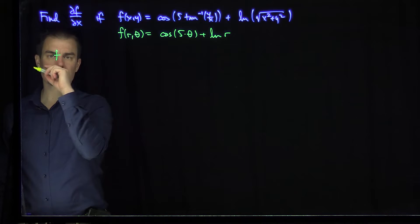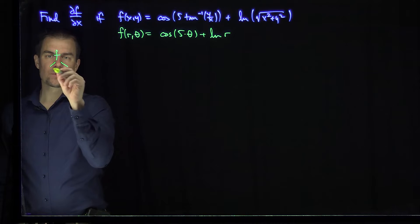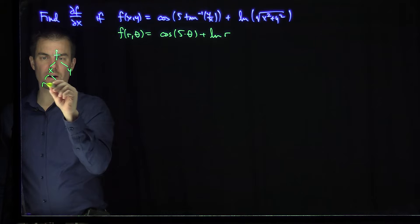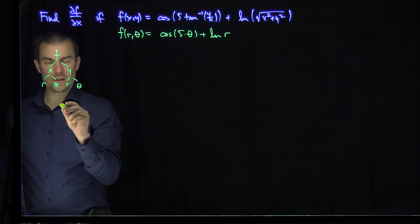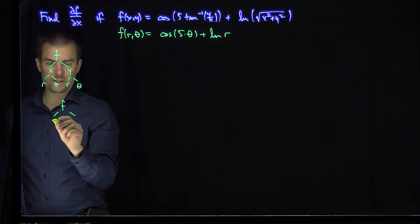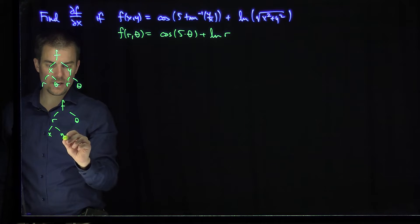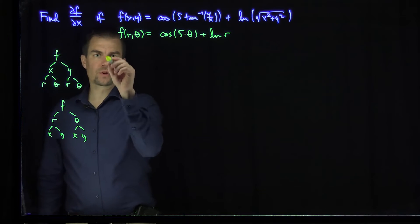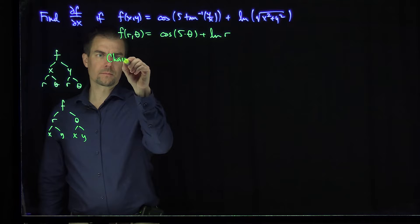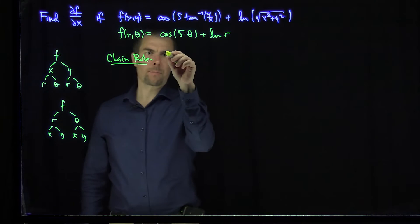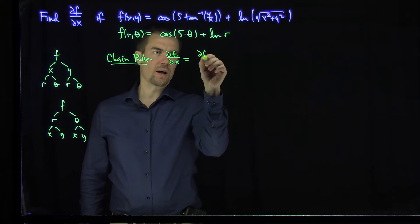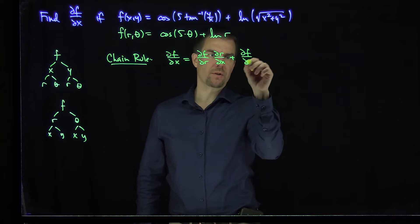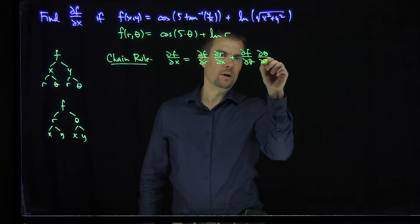We have a function f of x and y, and we think of x and y as functions of r and theta, or equivalently r and theta depend on x and y. By the chain rule, partial f partial x equals partial f partial r times partial r partial x, plus partial f partial theta times partial theta partial x.